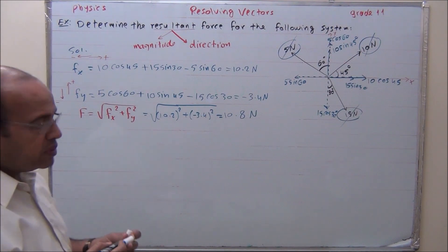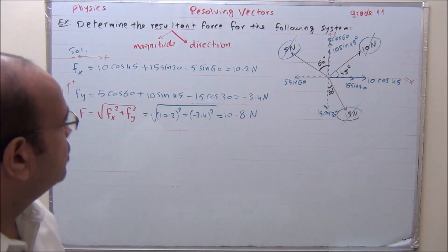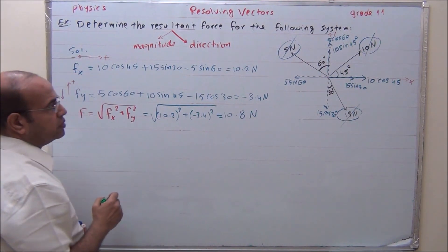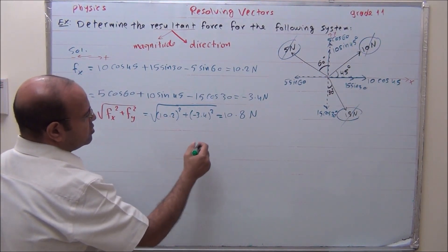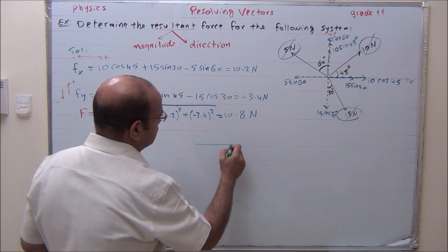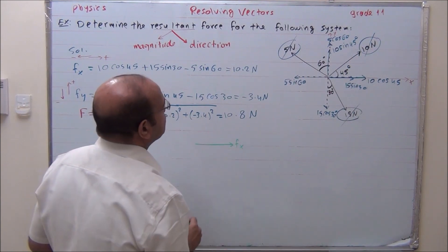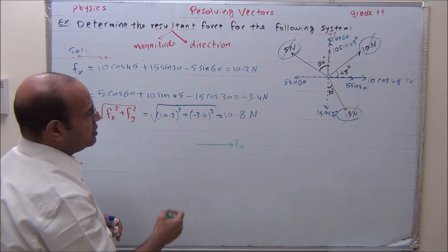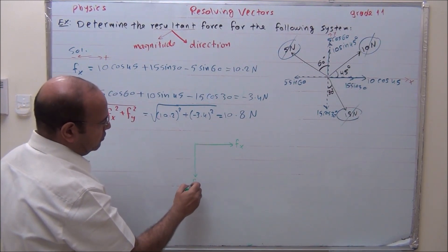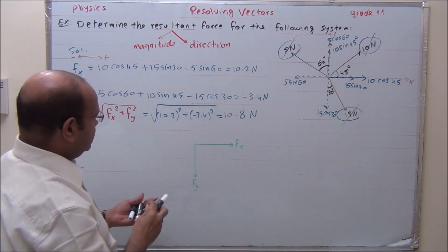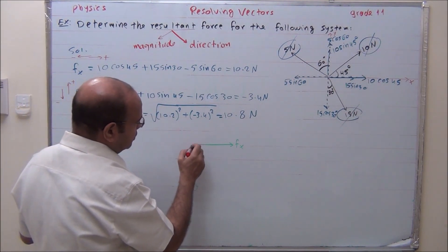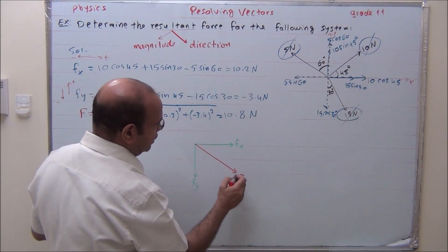What about the direction? Fx is positive, so it is in this direction. Fy is negative, so it is downward. Then the resultant force takes this direction.